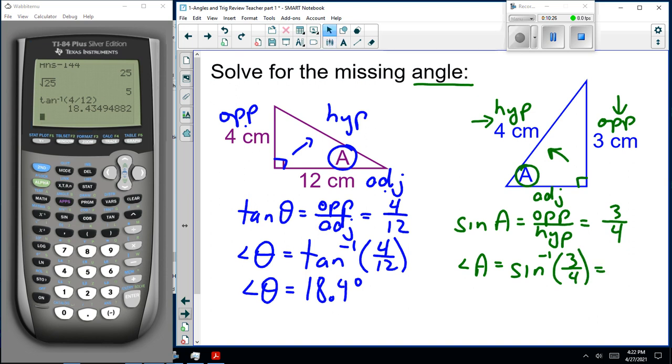So, angle A, sine to the minus 1, 3 divided by 4. Now, once again, if you have the little calculator in class, you put the number in first. If you have this calculator I'm using, I have to go inverse sine. Notice it says sine to the minus 1. 48.6.